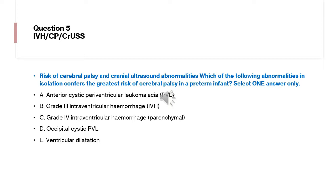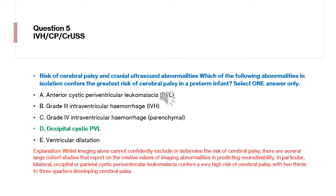The answer options are: periventricular leukomalacia (PVL), grade 3 IVH, grade 4 IVH with parenchymal involvement, occipital cystic PVL, or ventricular dilatation. The correct answer is occipital cystic PVL.